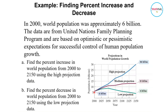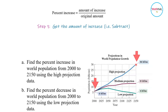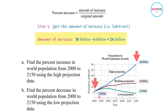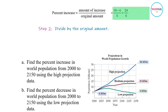They all start with around 6 billion at the beginning in 2000. For part A, we want to find the percent increase. To get the percent increase, all you need to do is get the change in the amount. From 6 billion, by 2150 the projected population will be 30 billion. The change will be 30 minus 6, which is 24. Then divide it by 6: 24 divided by 6 is equal to 4.